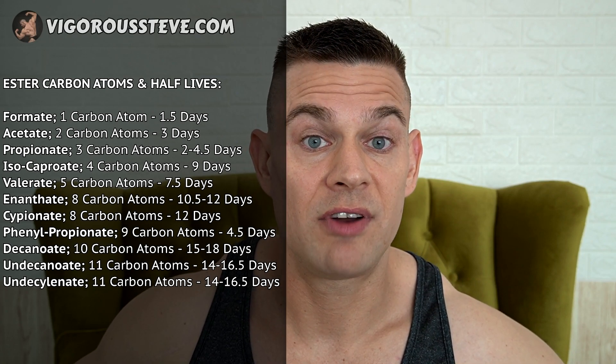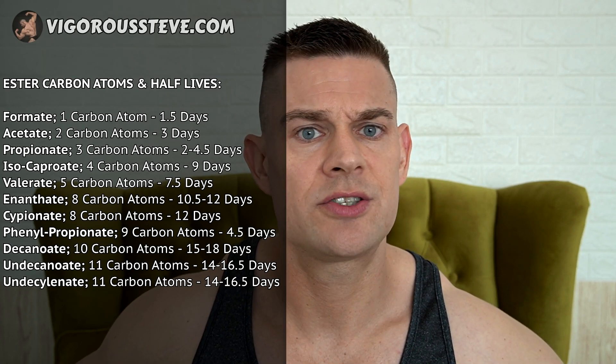Cypionate has a half-life of 12 days, while testosterone enanthate has a half-life of 10.5 to 12 days. So the mean is a little bit lower, even though the amount of carbon atoms are the same - it has to do with the positioning and how the esterases and hydrolysate enzymes are able to cleave off these carbons one step at a time. Propionate has a half-life of 2 to 4.5 days, so the mean half-life of propionate is about 3 times lower than enanthate and cypionate, because the amount of carbon atoms are 3 times lower.